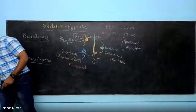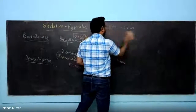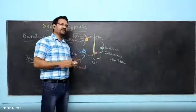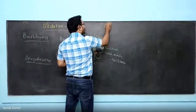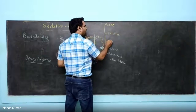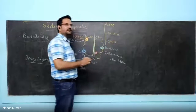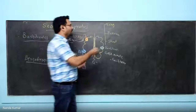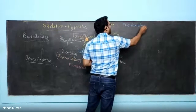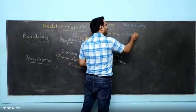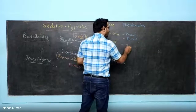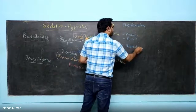Let us see about barbiturates. Barbiturates are classified according to the duration of action: long duration of action, intermediate duration of action, and short-acting or ultra-short-acting barbiturates. It all depends on the duration of action. The long-acting one is phenobarbitone, whereas intermediate-acting ones are pentobarbitone and butabarbitone. Short-acting or ultra-short-acting ones are thiobarbitone and methohexitone.